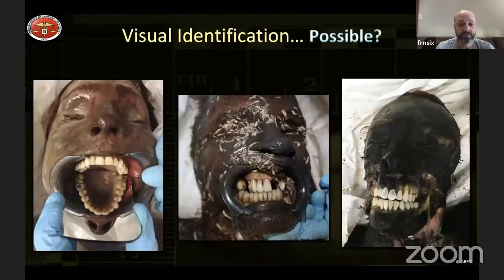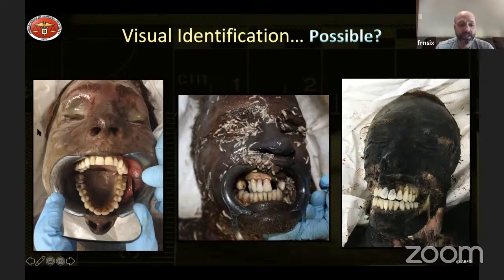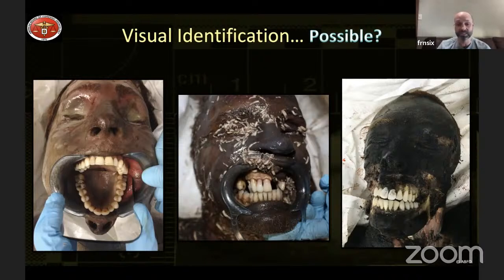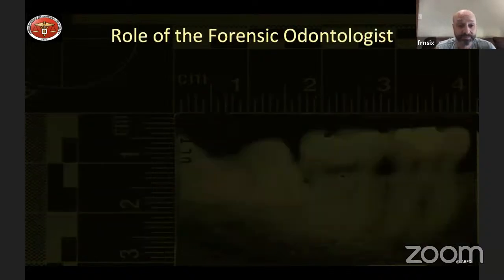If you look at these remains — the picture on the left, you can see some hair and might visually identify the person; the middle shows more decomposition with maggot infestation; the right is a burn victim — the middle and right are definitely not visually identifiable. But if you look at the teeth, they've withstood whatever happened to the remains and are in great shape. We can take x-rays, look at those teeth, and use them for identification very rapidly.